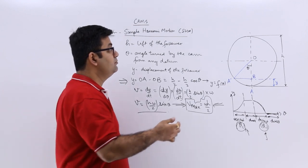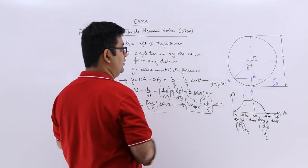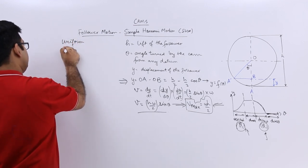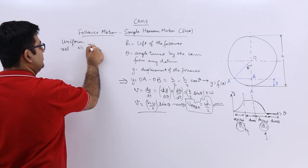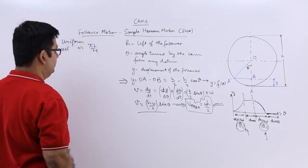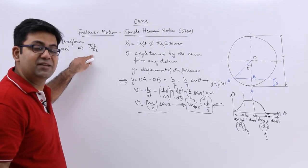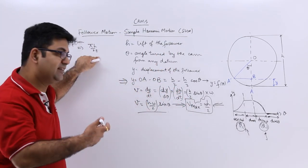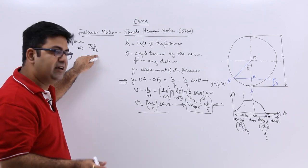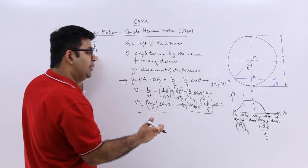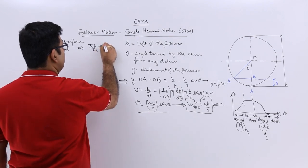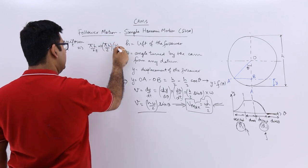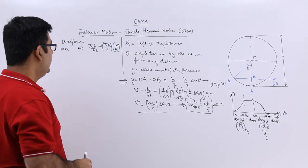So if I have to write down the uniform velocity of a particle moving on the circumference of the circle, that will be equal to pi into h by 2, divided by T. Now time is displacement by velocity. So if I talk about theta 1 during ascent, the time would be displacement theta 1 divided by velocity omega. So this would be pi into h by 2 into omega by theta 1.